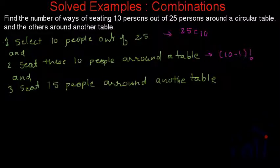This we have learned in the video in which I'm explaining the calculations of permutations in which the objects are arranged in a circle. So there will be total 10 minus 1 factorial ways in which these selected 10 people can occupy the positions around a round table.